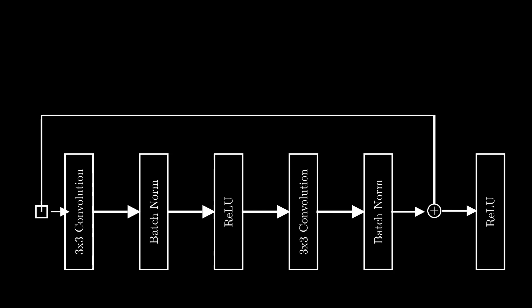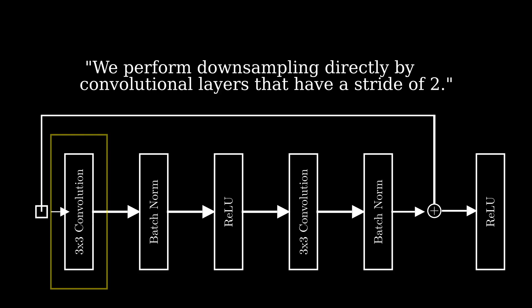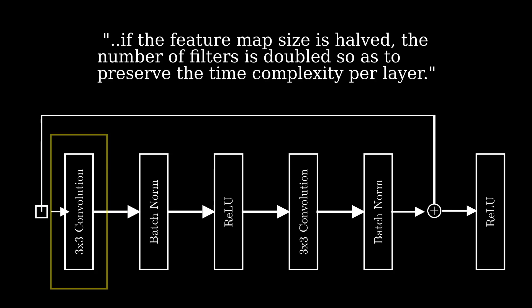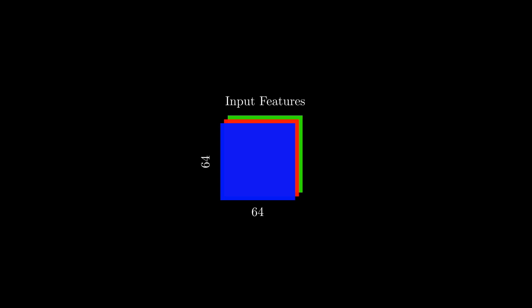Let's look at how the network can downsample features within the ResNet block. The first convolution, which had a stride of 1 and padding of 1, kept input feature dimensionality the same as the output. The authors propose to downsample features directly by occasionally altering this convolutional layer to have a stride of 2, producing features with half the height and half the width. When downsampling in this fashion, they also double the number of convolutional filters, which in turn doubles the number of channels in the output features. This creates a dimension mismatch, as our input sent through the residual connection does not have the same dimensions as the features coming through the network.